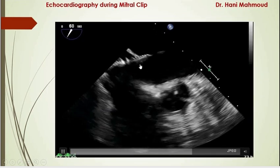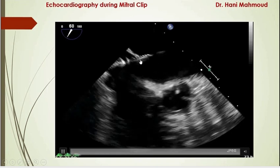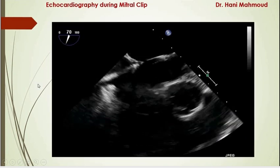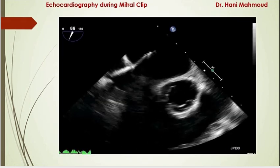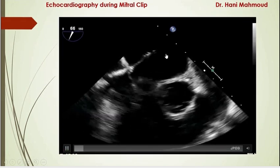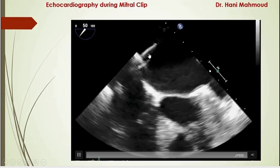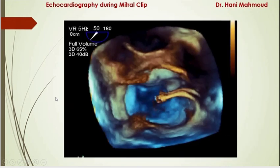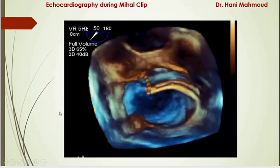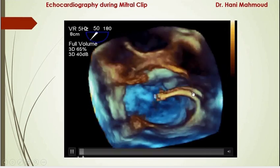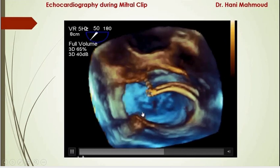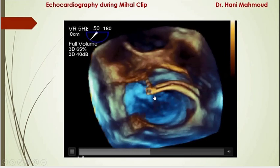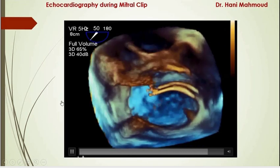The needle is then introduced, and we should see the characteristic echo tent sign inside the left atrium to confirm that septal puncture happened correctly. After that, the interventionist introduces the sheath over the needle and withdraws the needle. The sheath remains inside, and sometimes you will be asked to measure its depth inside the left atrium. In the 3D live view, we can see the catheter coming through the intra-atrial septum into the left atrium, and monitor the movement of the sheath and the clip as it comes out of the sheath.